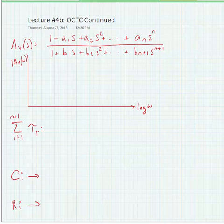We're now going to look in a little bit more detail at the open circuit time constant or OCTC method to find the high frequency rolloff of an amplifier.